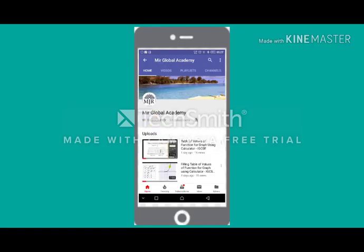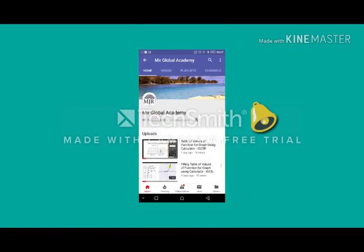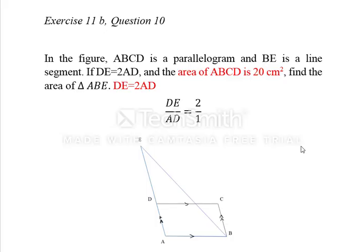Press the subscribe button and don't forget to press the bell button for upcoming new videos. This is question number 10 from exercise 11b. In the figure, ABCD is a parallelogram and DE is a line segment. DE is equal to 2 times AD, and the area of parallelogram ABCD is 20 centimeter square.